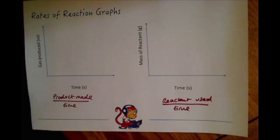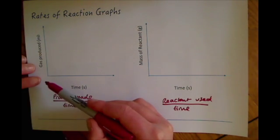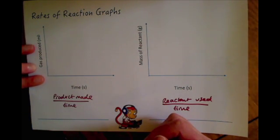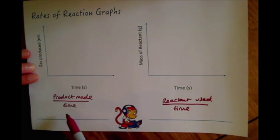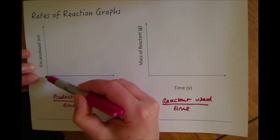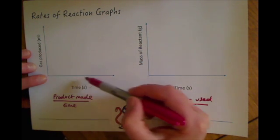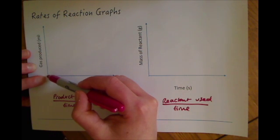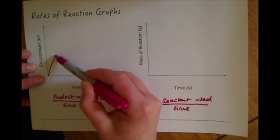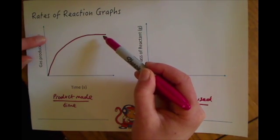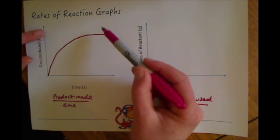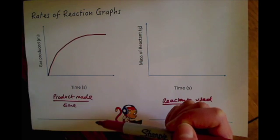If we draw a couple of graphs to represent rate of reaction, we'll start with this one. On the side we've got gas produced in millilitres and on the bottom we've got time — this represents how much product is made over time. As time goes up the gas produced also increases, and then it levels off at the end because all of the reactants would have reacted together.